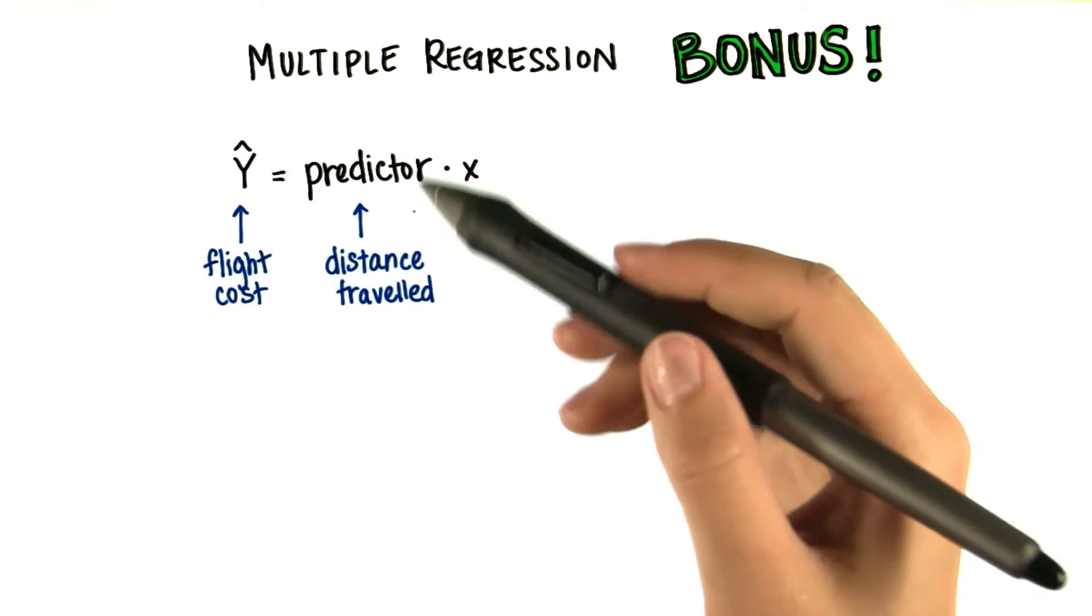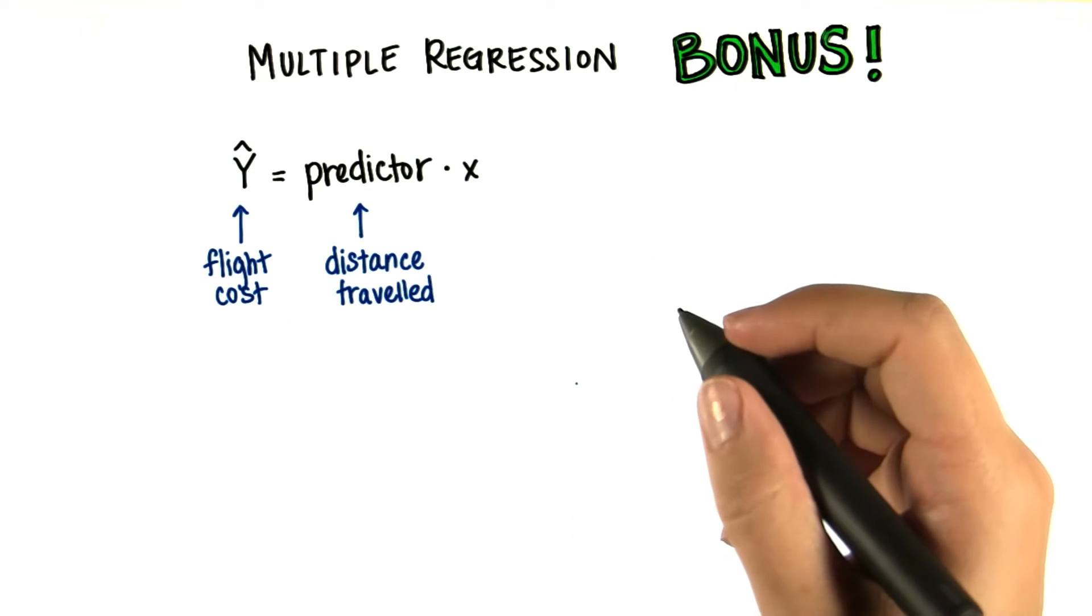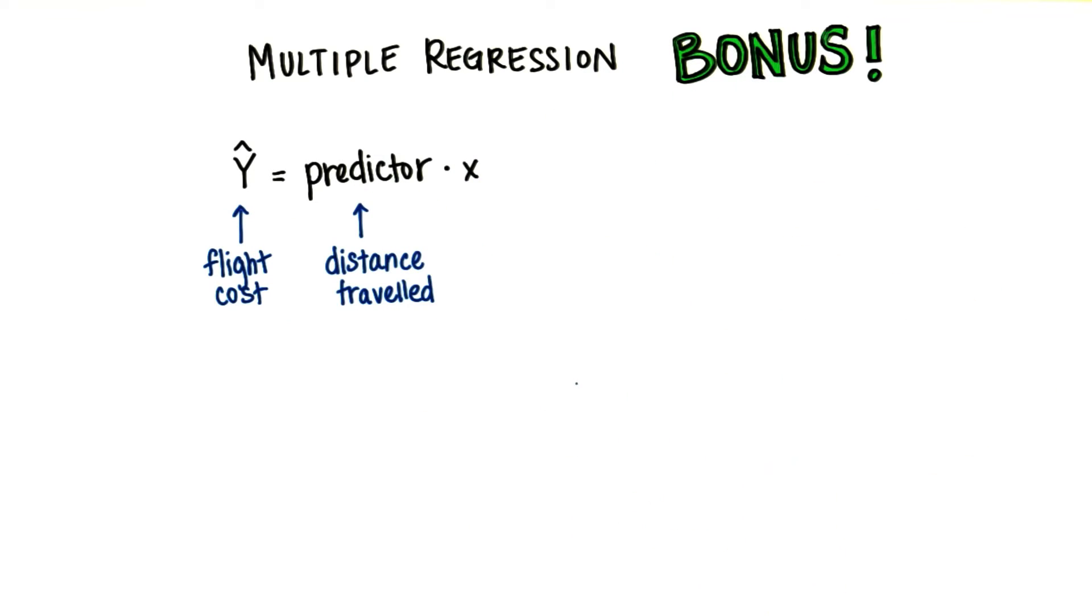But oftentimes, there are many factors that can predict the dependent variable. When we use multiple predictors, we're doing multiple regression.